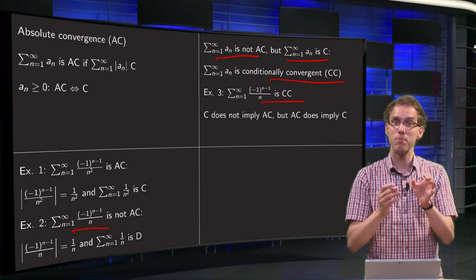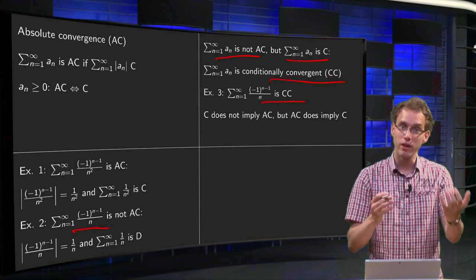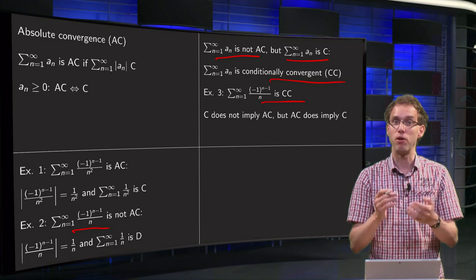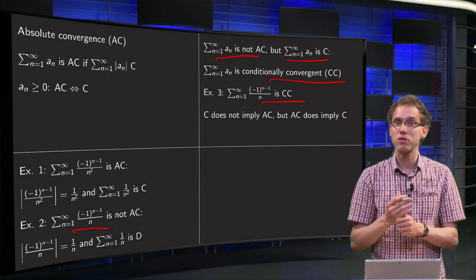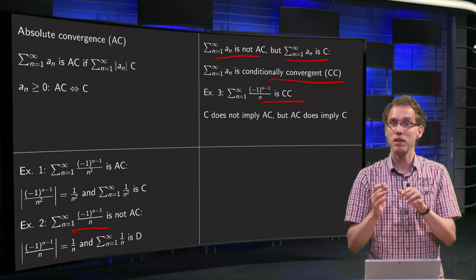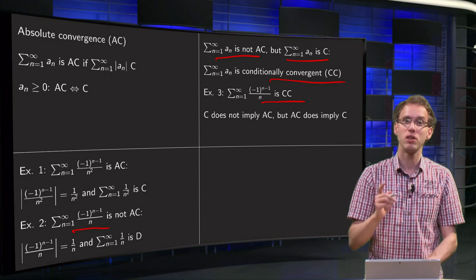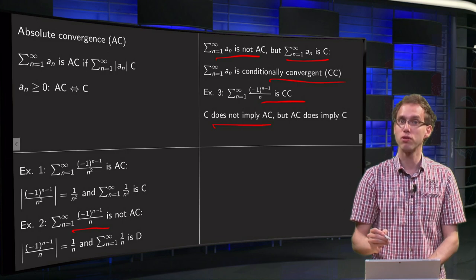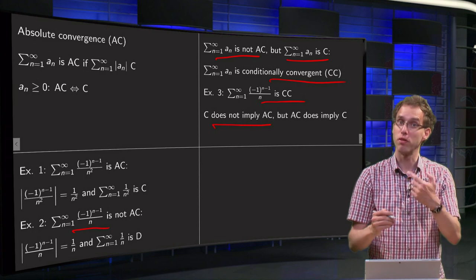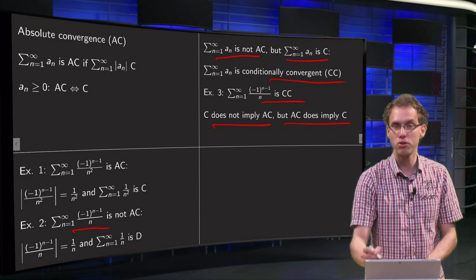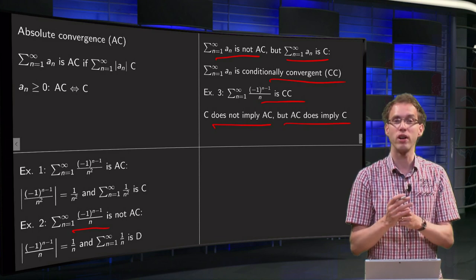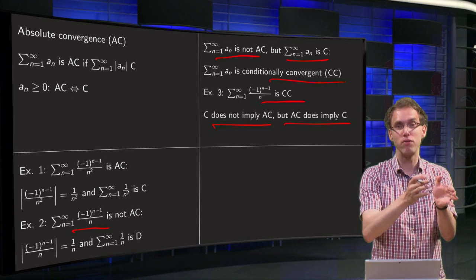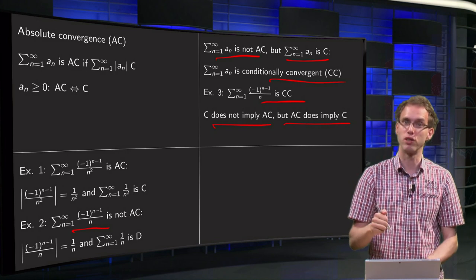So a series can be convergent but not absolutely convergent, or a series can be both. Can a series be absolutely convergent but not convergent? No, that is not the case. Convergence does not imply absolute convergence, but vice versa it does. Absolute convergence is stronger than convergence: if a series is absolutely convergent, then it is also convergent.